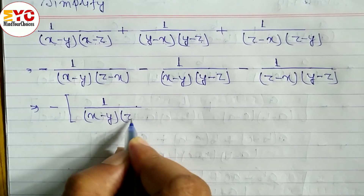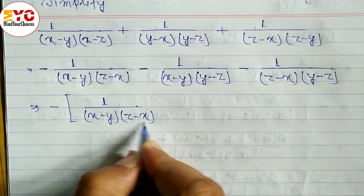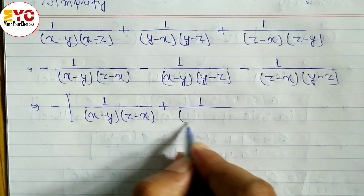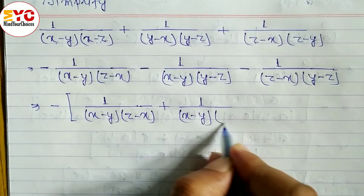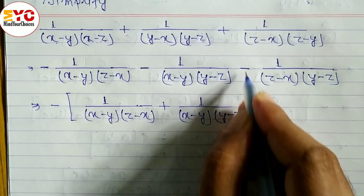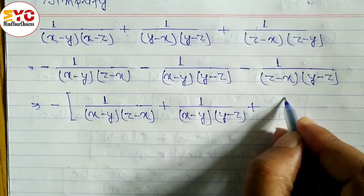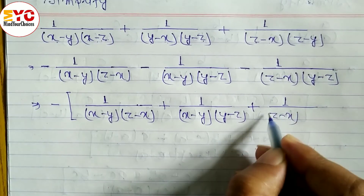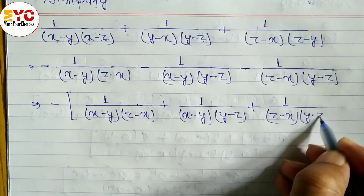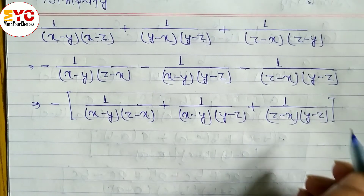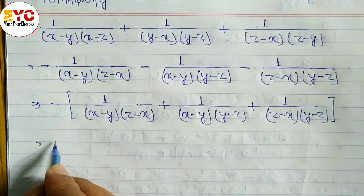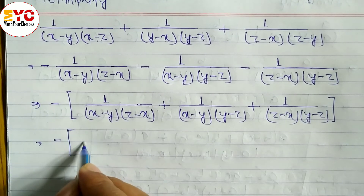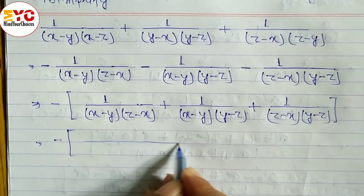After converting, all three terms carry a minus sign. We take minus common from all three, changing each sign. We rewrite as minus times [1 over (x minus y)(z minus x) plus 1 over (z minus x)(y minus z) plus 1 over... wait — the expression becomes minus times [1 over (x minus y)(y minus z) plus 1 over (z minus x)(y minus z) plus 1 over (x minus y)(z minus x)].